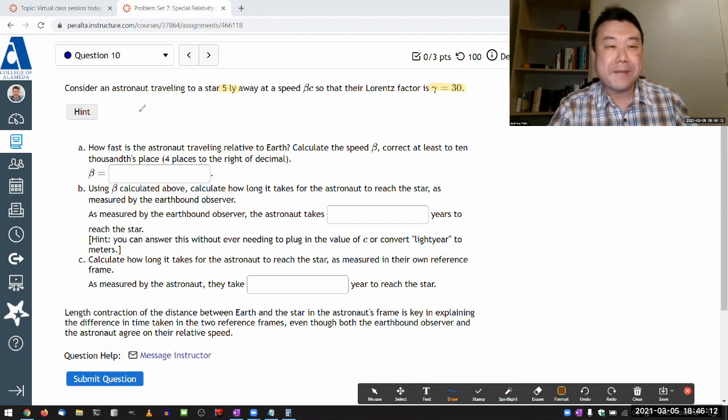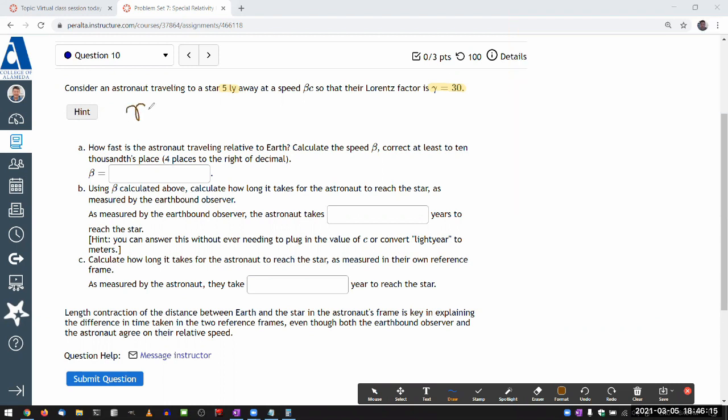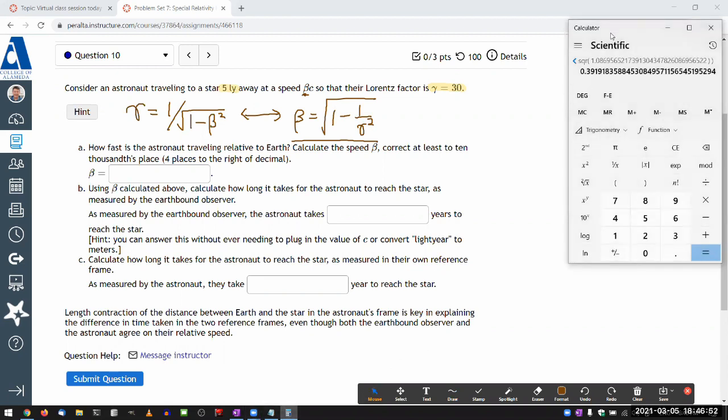I hope by the time we finish with special relativity, that you have a formula for gamma memorized. Gamma equals 1 over square root of 1 minus beta squared, where beta is speed as a fraction of speed of light. And that inverse relationship, beta equals square root of 1 minus 1 over gamma squared. It's worth memorizing, just because it occurs often, and I think memorizing this reinforces the idea that when you know gamma, when you know Lorentz factor, you automatically know velocity. Let me just plug the numbers into calculator and see what I get.